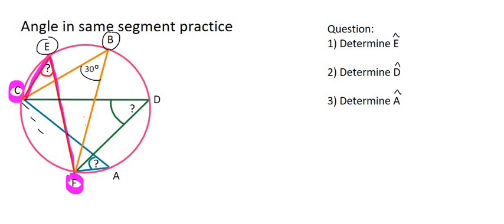Now if we connect C and F together, we can see that both E and B are above the dotted line, and so that is a good thing. That means they are in the same segment. Therefore, we can say that angle E is equal to 30 degrees.